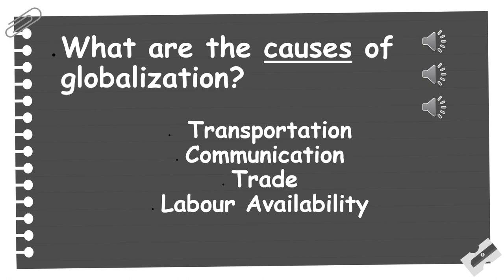Now we're going to explore the causes of globalization across different subjects, starting with transportation. Developments like high-speed rail and flights mean that people and goods can travel much more quickly around the world. Regarding communication, the increased speed of internet technology has allowed for far greater and more effective connectivity between people across the globe. In terms of trade, many countries have trading agreements that allow for the exchange of goods with relative ease globally. Finally, regarding labor availability, workers are no longer confined to their geographical location — they travel to different countries to work in various capacities due to migration.